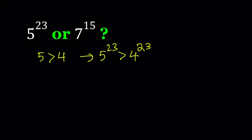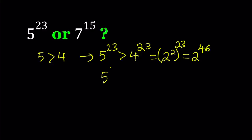We can write 4 as 2 squared, and then it's raised to the power 23. By power of power, we get 2 to the power 46, because we're supposed to multiply the exponents. So we get that 5 to the power 23 is greater than 2 to the power 46. Let's go ahead and write that down as a result: 5 to the power 23 is greater than 2 to the power 46.